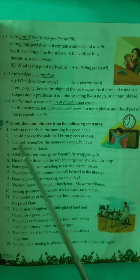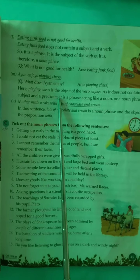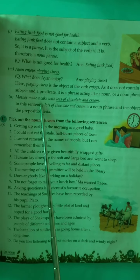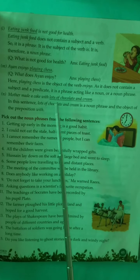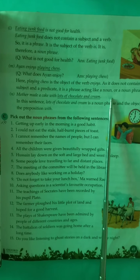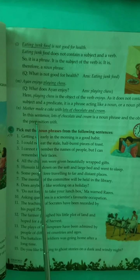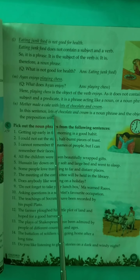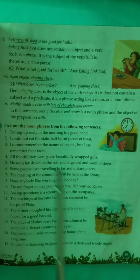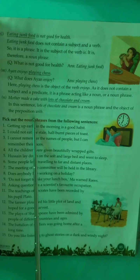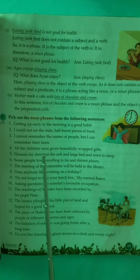Example two: 'Ayan enjoys playing chess.' What does Ayan enjoy? Playing chess. The subject is 'Ayan' and the predicate is 'enjoys playing chess.' 'Playing chess' is a phrase acting like a noun — a noun phrase. And in the last example: 'Ayan's mother made a cake with lots of chocolate and cream.' In this sentence, 'lots of chocolate and cream' is a noun phrase and the object of the preposition 'with.'